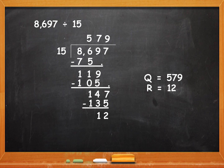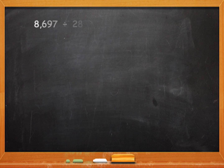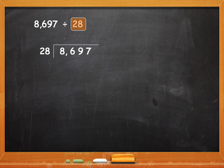This long division was easy since you already knew the tables of 15. But if we take the same dividend 8697 and change the divisor to 28 — 28 is a large number and you do not know the tables. You might require to do a little bit of calculations. For that, you need a rough column. I will draw the rough column first.